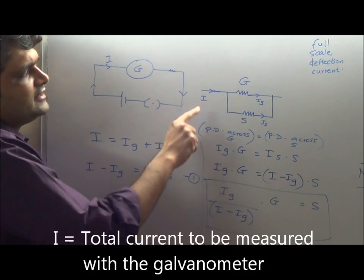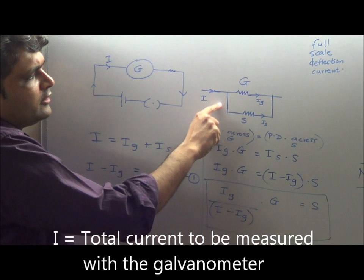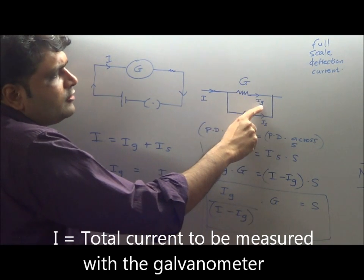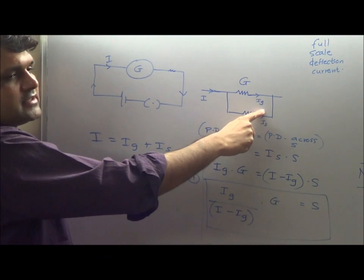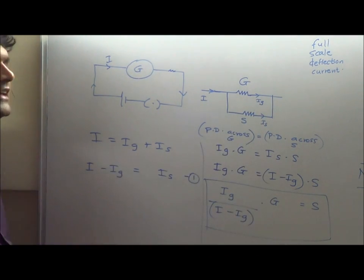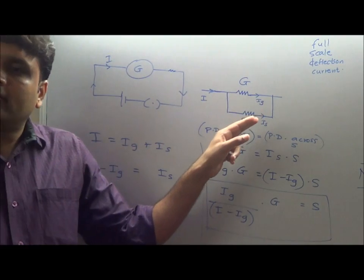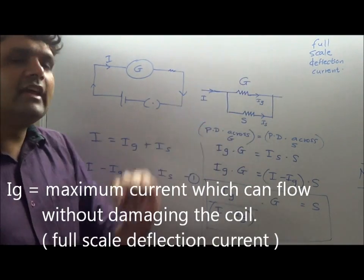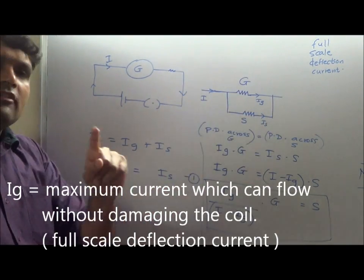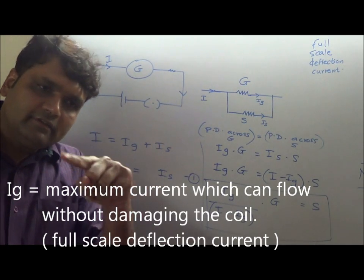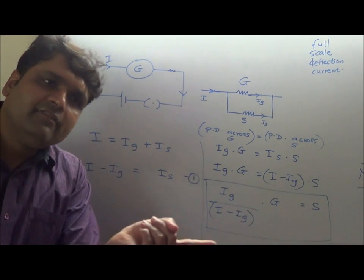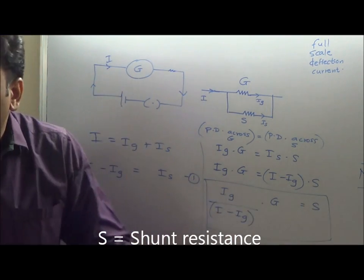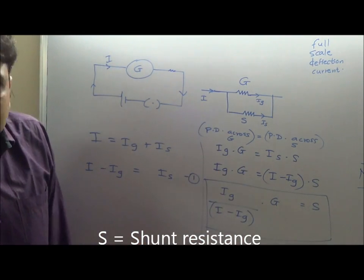Let's say the total current to be measured is I. Part of the current flows through the shunt — let's call it I_S — and part flows through the galvanometer coil — let's call it I_G. I_G is the maximum current which can pass through the galvanometer without damaging the coil; it is also called the full-scale deflection current, meaning the needle deflects across the entire scale. But I may want to measure currents larger than I_G, so I will be a value probably larger than that.